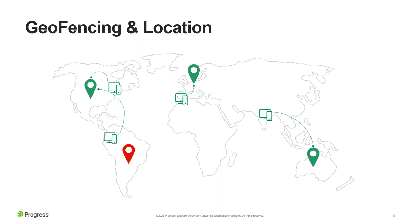Geofencing is also very useful for GDPR compliance in Europe, where data can't be transmitted outside the region. Some people have taken to blocking requests from outside Europe for their European websites. With geofencing you can say only respond to people within Europe; anybody outside Europe gets sent to APAC or US. There's also a security play here — if you have a rogue actor country generating attacks, you can block them out and not give them a DNS entry.